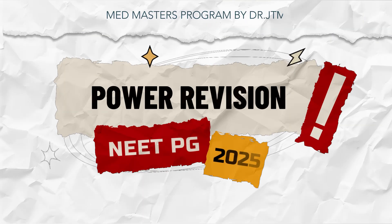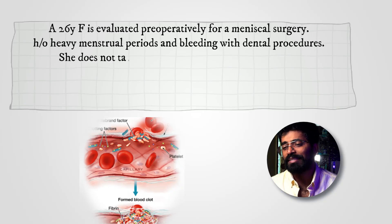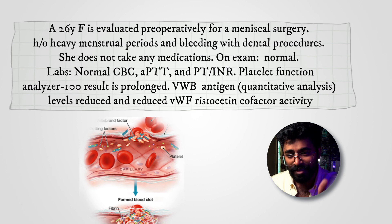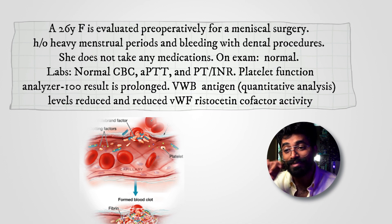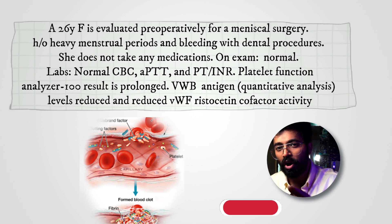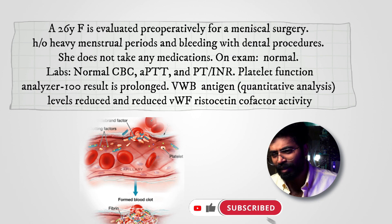The question: a 26-year-old female is evaluated pre-operatively for a meniscal surgery with a history of heavy menstrual periods and bleeding during dental procedures. She does not take any medications — no history of any anticoagulants or antiplatelets. On examination, the patient is completely normal.